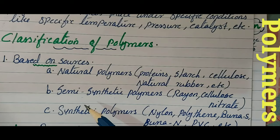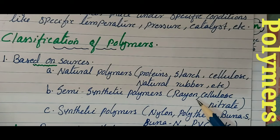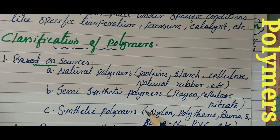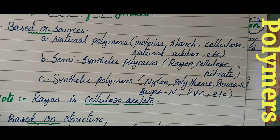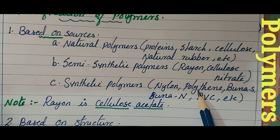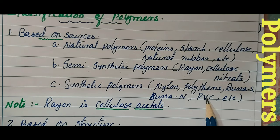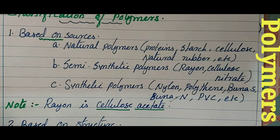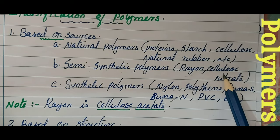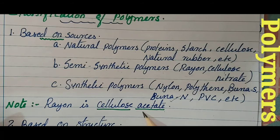Semi-synthetic polymers: the raw materials are taken from nature and after some chemical treatment we get these polymers. For example, rayon — known as artificial silk — is chemically cellulose acetate. Cellulose nitrate is another semi-synthetic polymer. Synthetic polymers are purely chemical in origin.